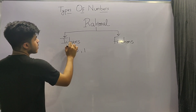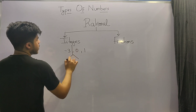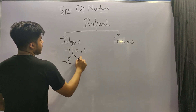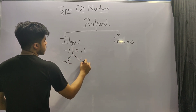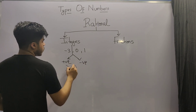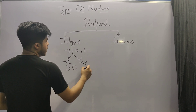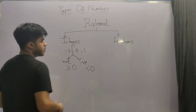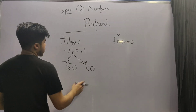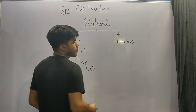Integers can further be subdivided into two parts: positive integers and negative integers. All the integers that are greater than or equal to 0 are considered as positive integers, and all the integers which are less than 0 are considered as negative integers. Now let's move on to our second part, which is fractions.